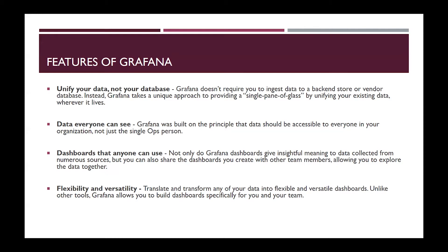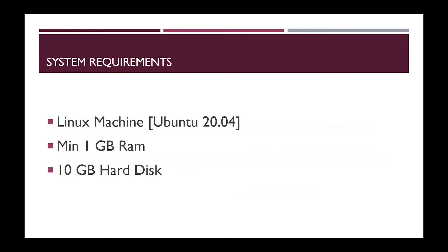The system requirements for running Grafana: you need a Linux machine. You can also install it on Windows, but in this tutorial I am going to explain how to install it on a Linux Ubuntu machine. You need a minimum of 1 GB of RAM and 10 GB of disk space.